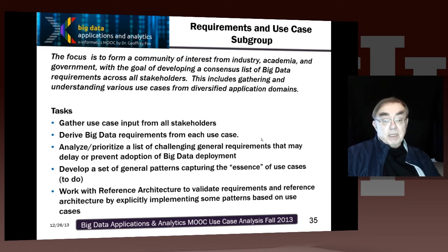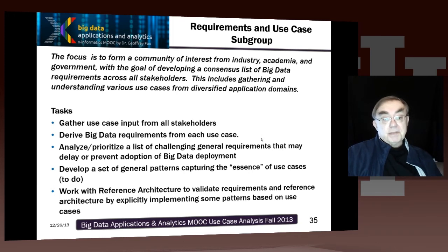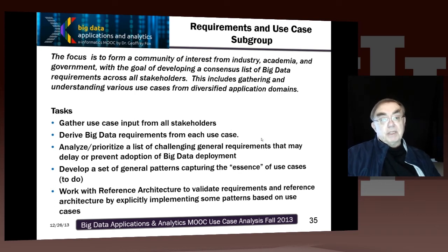Something which has not been done is to validate the requirements and reference architecture by implementing some of these patterns. We have not actually implemented any patterns, so that is clearly still to do. It is not realistic to implement a real application in a generic fashion — you need to find an application paradigm or pattern, implement it generically, and use that to evaluate the reference architecture.